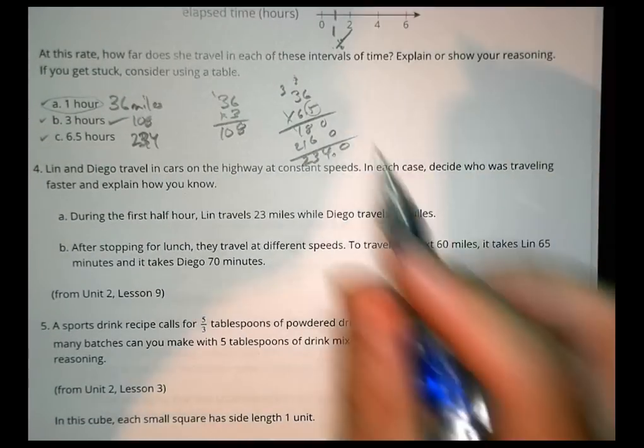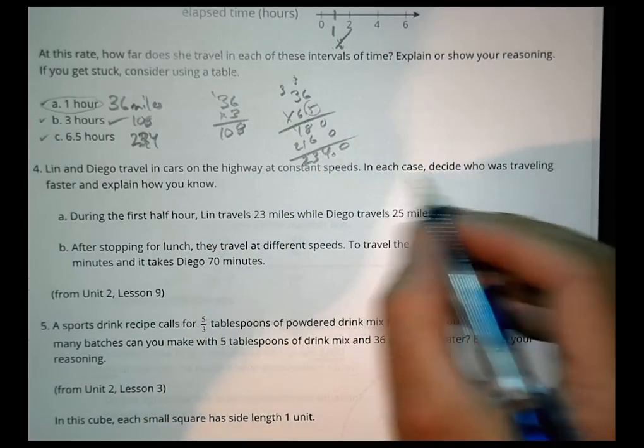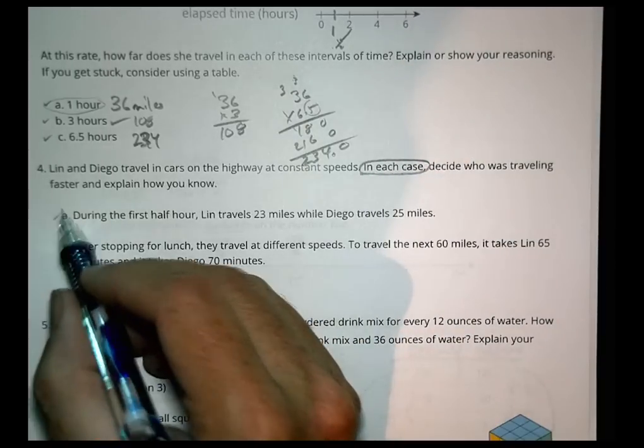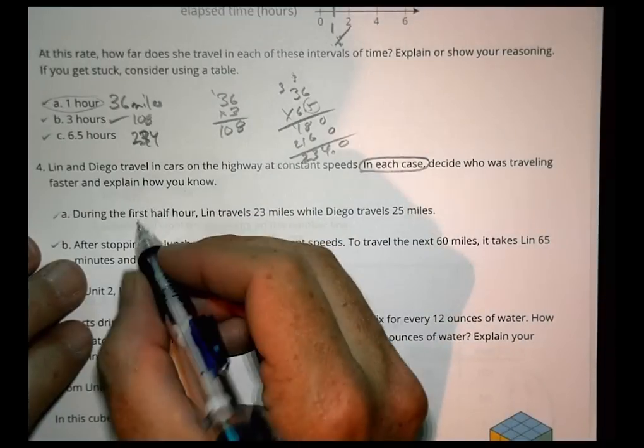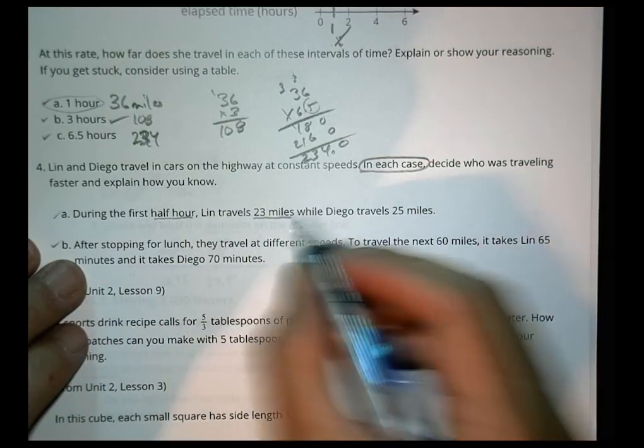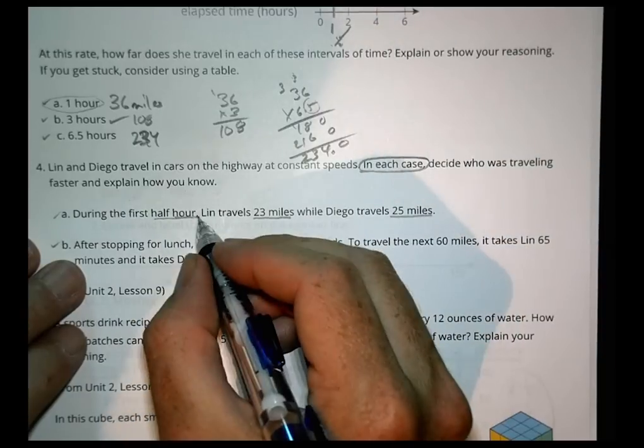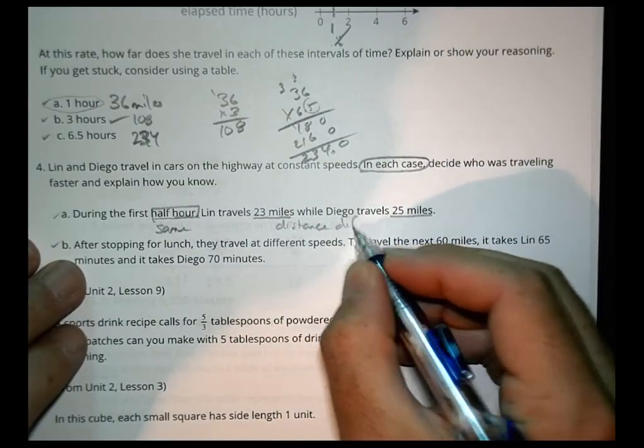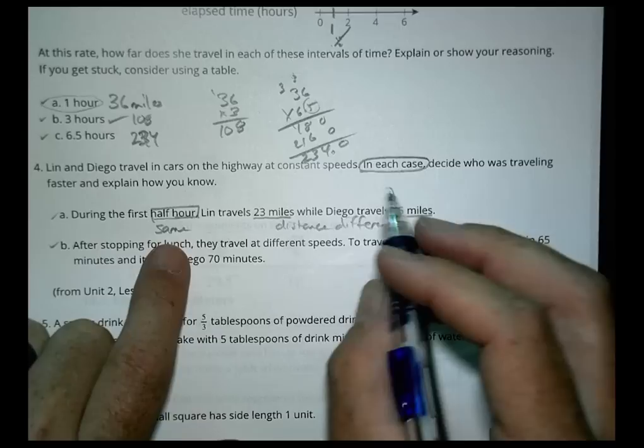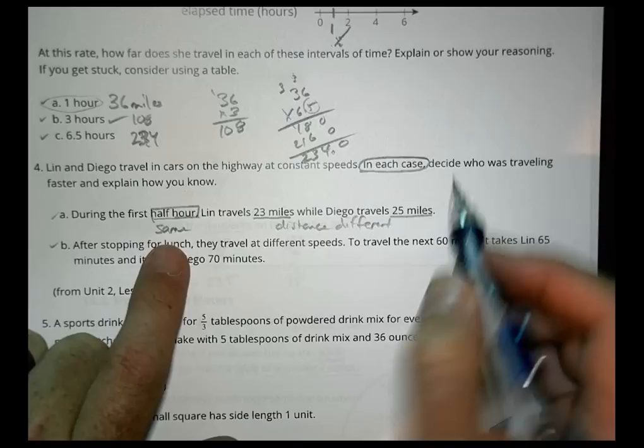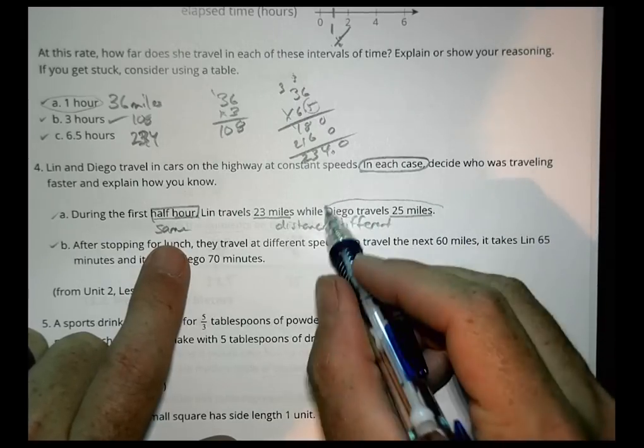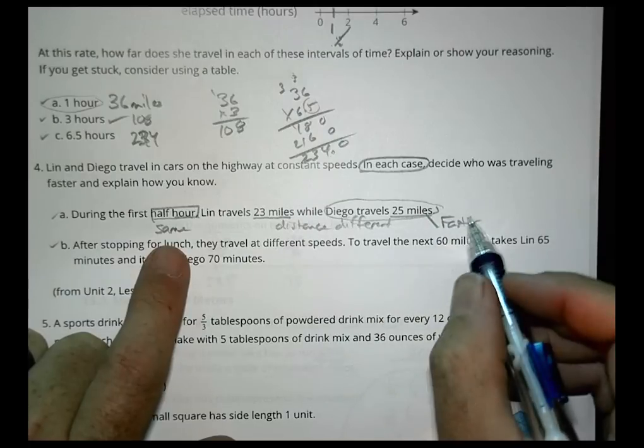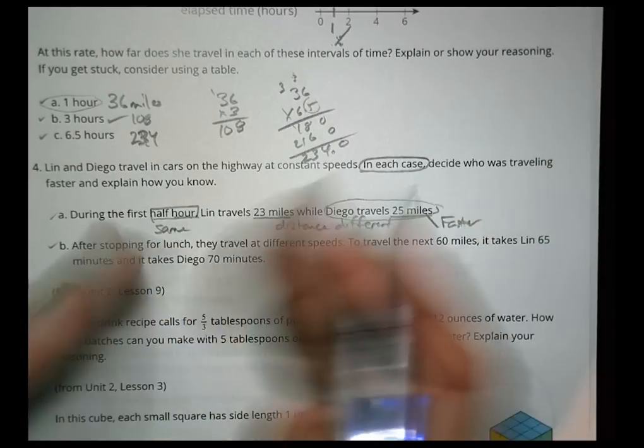Number 4. Lynn and Diego travel in cars on the highway at constant speeds. In each case, decide who is traveling faster. The key thing is it says in each case. There's case A and case B. In case A, during the first half hour, Lynn traveled 23 miles and Diego travels 25 miles. So the time is the same, but the distance is different. It's like setting a stopwatch and after 30 minutes, who went further? Diego went 25 miles in 30 minutes, which means Diego's going faster than Lynn in that first part, because they went the same time, he went further.